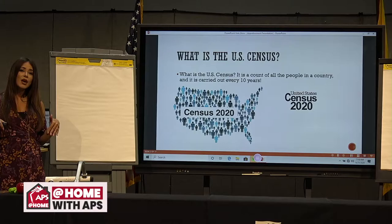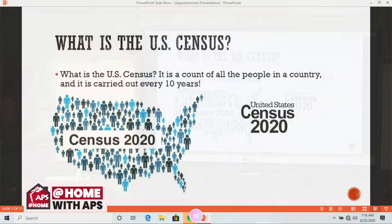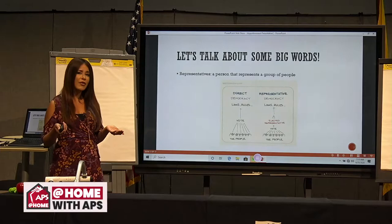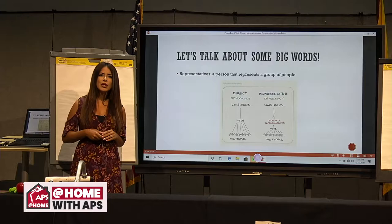Let's talk about some big words, and the word apportionment is going to come back again so that you all know what it means. The first big word is called representative. A representative is a person that represents a group of people — one person is chosen, we vote for people for our government to represent a large group of people. Did you know that every representative we have in New Mexico actually represents 700,000 people?